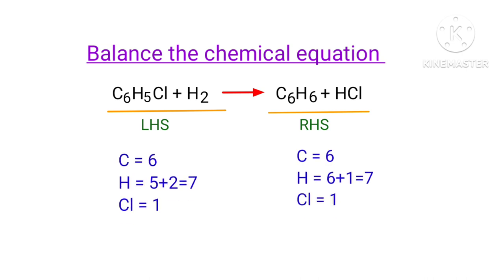In this equation, on the left hand side there are 6 Carbon Atoms, 7 Hydrogen Atoms, and 1 Chlorine Atom present. And on the right hand side there are 6 Carbon Atoms, 7 Hydrogen Atoms, and 1 Chlorine Atom present.